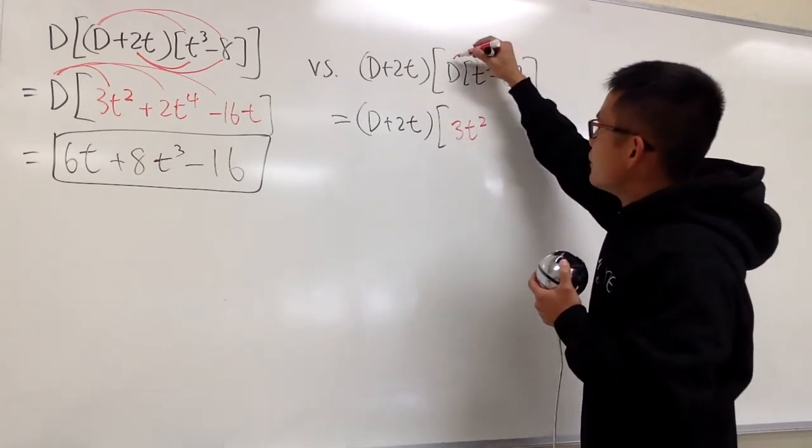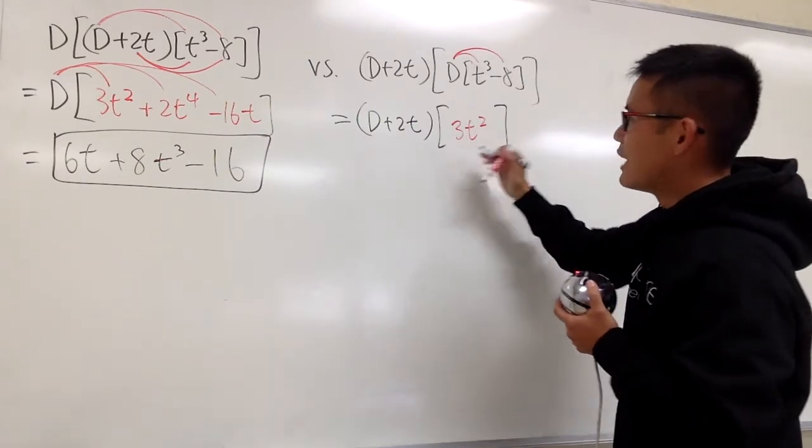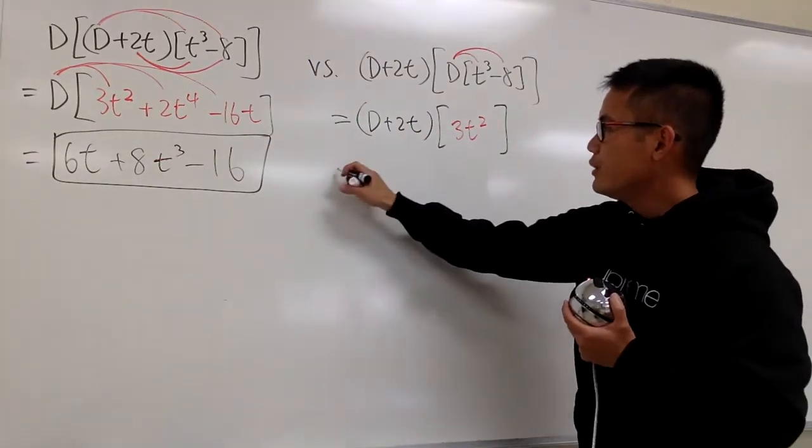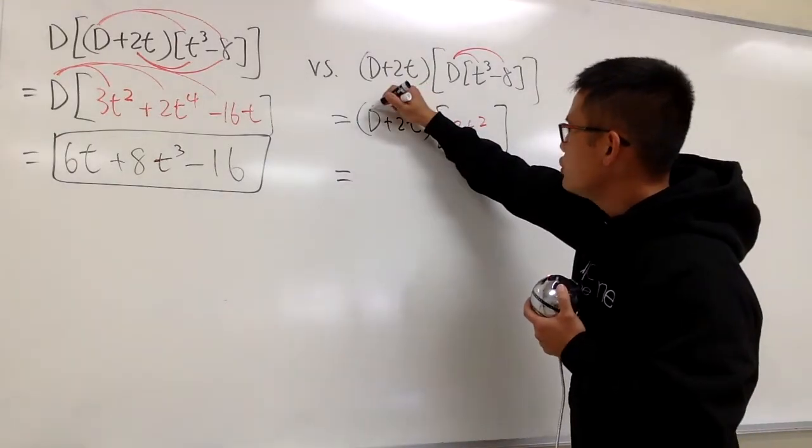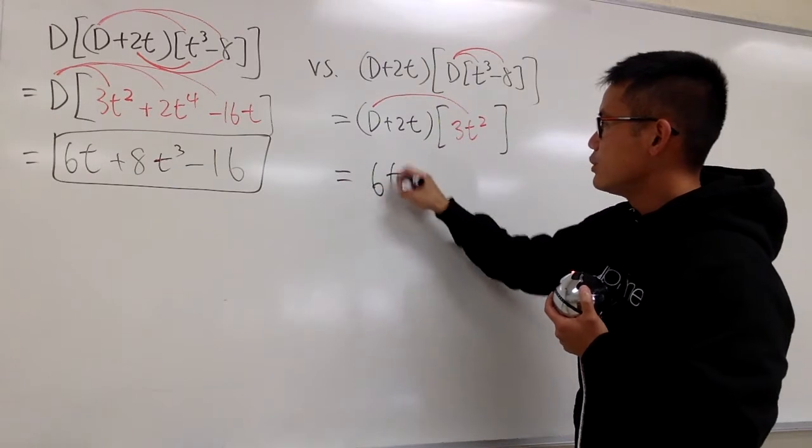We differentiate negative 8, which is just 0, so it doesn't matter. This is what we have for the inside. Then we continue. We differentiate 3T squared, which gives us 6T to the first power.